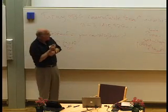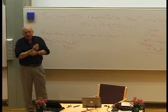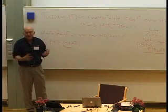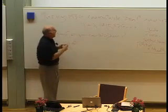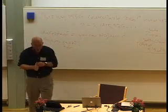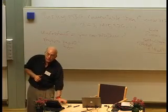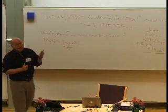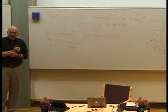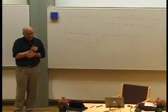So Turing, in his paper, 1936, defines a real number to be computable if you can calculate it digit by digit. And he points out that all the obvious numbers that you think of, like pi and e and solutions of algebraic equations, are all computable real numbers. But the interesting thing about this paper